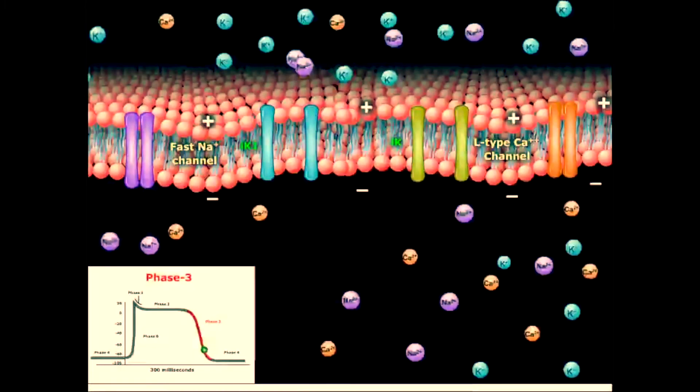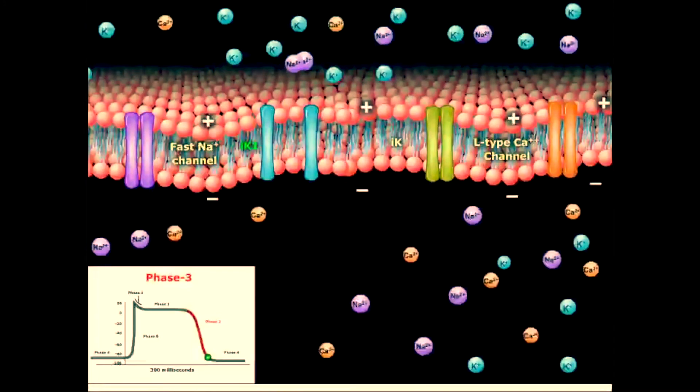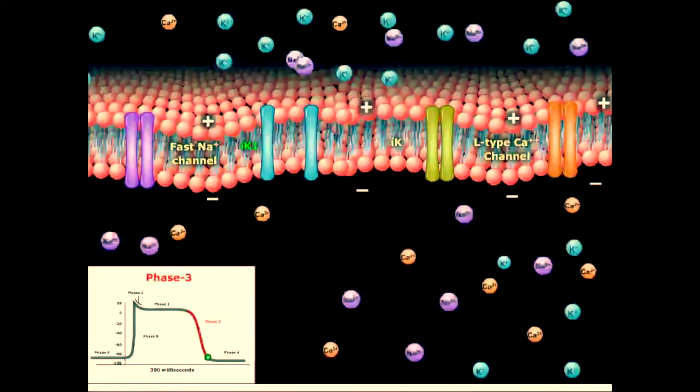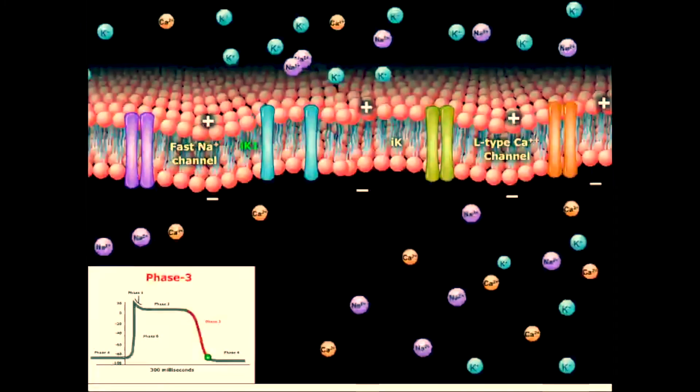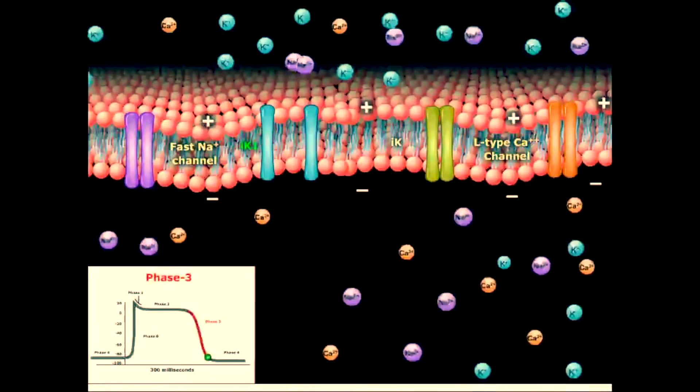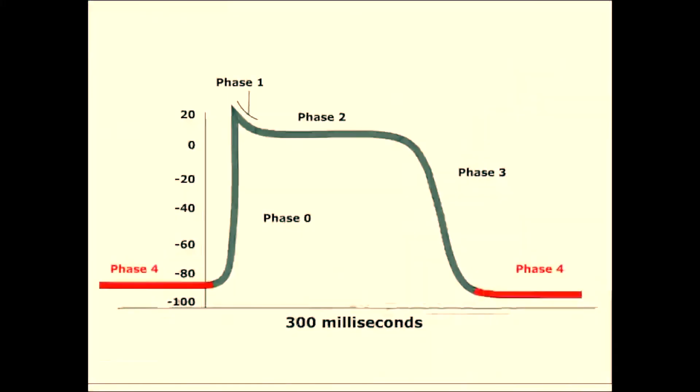The delayed rectifier potassium channels, or IK, closes when the membrane potential is restored to about minus 80 to minus 85 millivolts, which is represented in the lower window by the green dot. Phase 4 is reestablished due to rectifying potassium channels, IK1, remaining open to allow potassium to leave the cell.